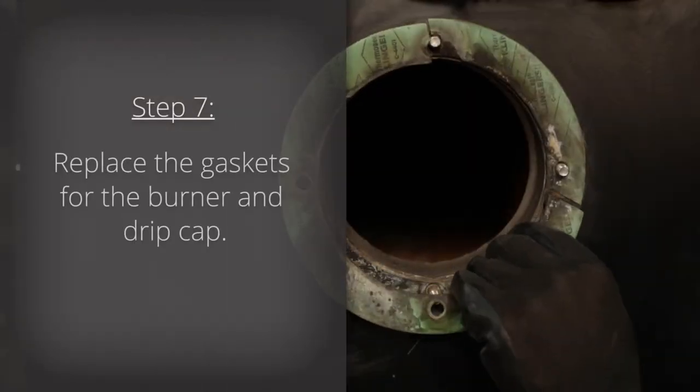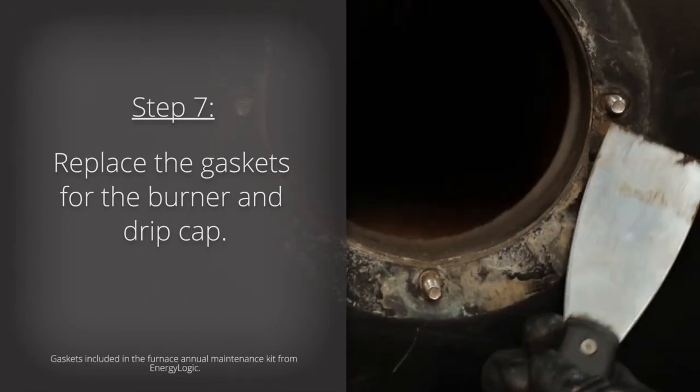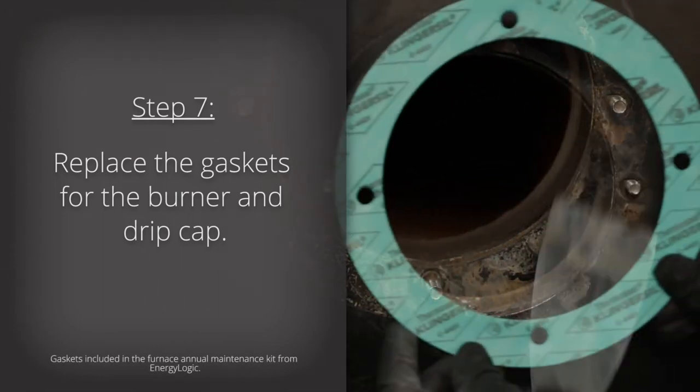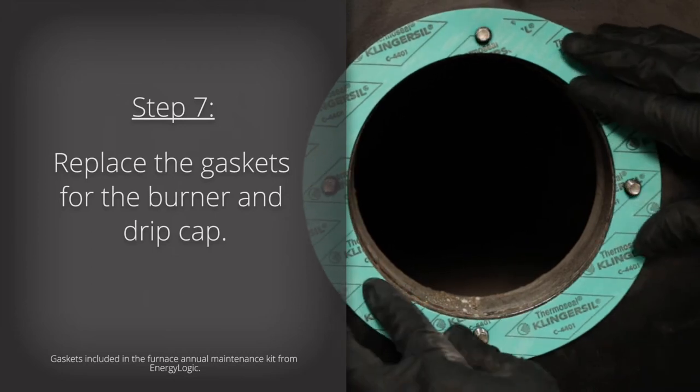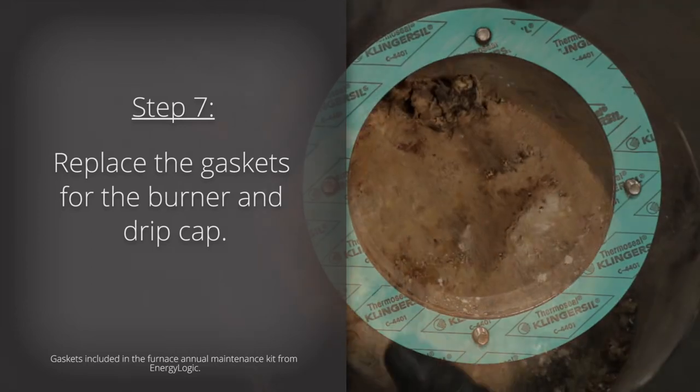Step seven, replace the gaskets for the burner and drip cap. These come standard with the EnergyLogic Annual Maintenance Kit. Inspect the heat exchanger and flue for damaged parts that might need to be replaced.